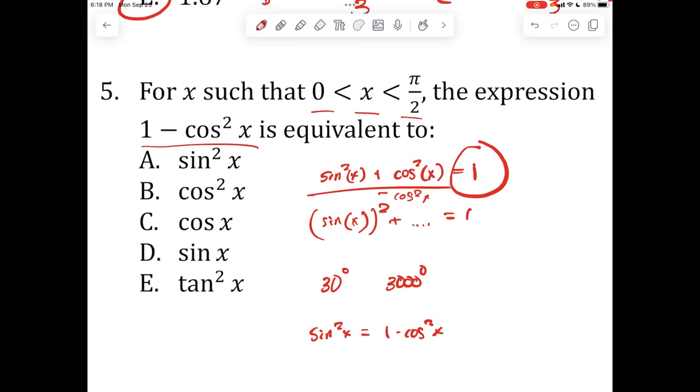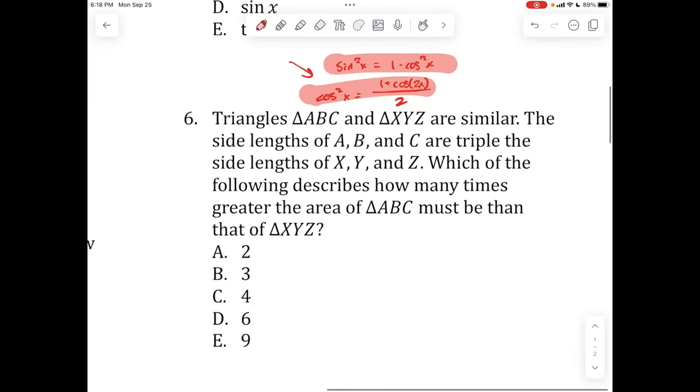Now if you take this right here and you just subtract cosine squared x on both sides, you end up getting sine squared x equals 1 minus cosine squared x. Simple as that. Now there are other trig properties that you can learn about. But relative to the ACT, I think this is the most important one that you should know. The only other one that I'll give you that I think I've seen before is cosine squared of x is equal to 1 plus cosine of 2x divided by 2. Again, very uncommon. But just plug in a number for x. Practice this a few times. Try to remember it. If you have a formula sheet, write it down.